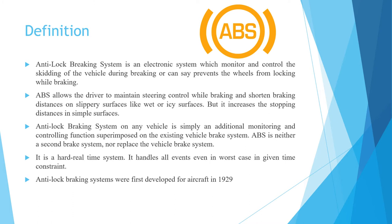These are the introduction details of ABS. Here is the picture showing the symbol of ABS which can be easily seen in our four-wheeler or two-wheeler dashboard. If we see this type of symbol light on a two-wheeler or four-wheeler dashboard, it means the vehicle has an anti-lock braking system which helps to prevent skidding on slippery surfaces.